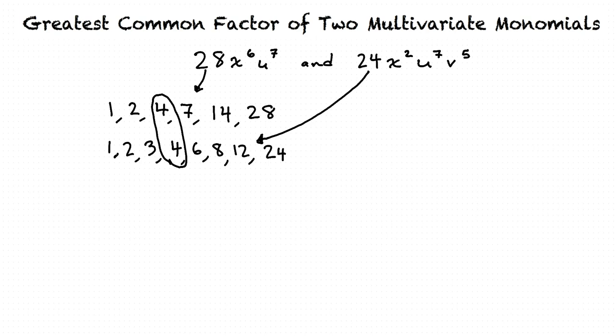The final answer is the product of each of these smaller answers that we found. So our first part was 4, our second part was x squared, and our last part was u to the seventh. So the final answer is 4x squared u to the seventh.